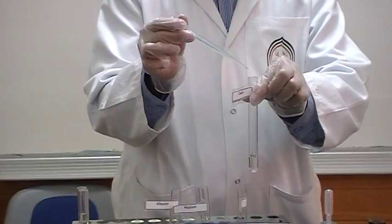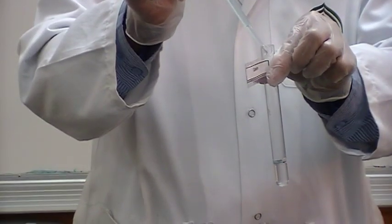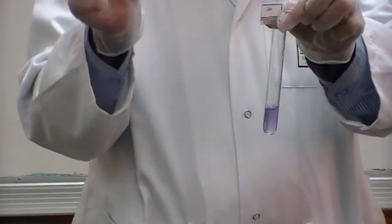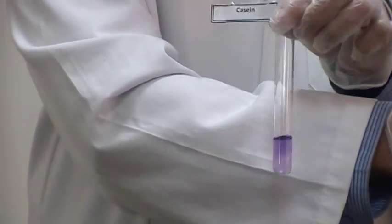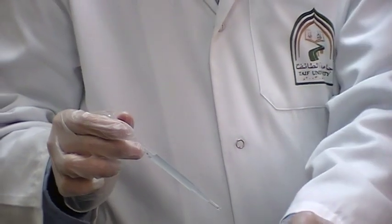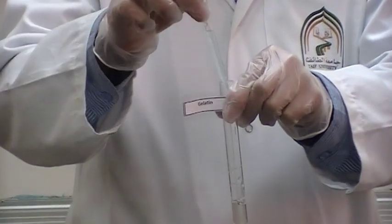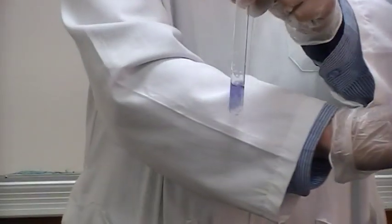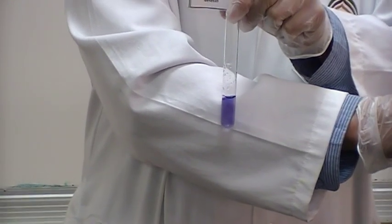Let's see what we're going to get. Can you see? Violet color with casein. Let's see what about gelatin. Still violet color with gelatin too.